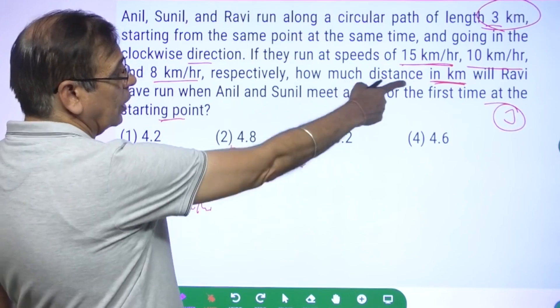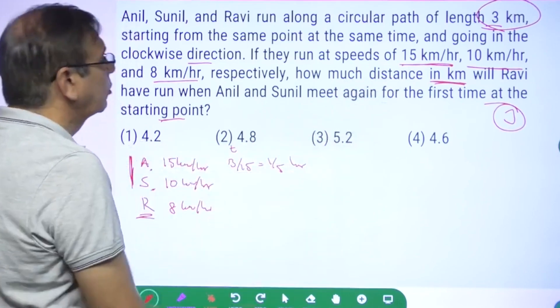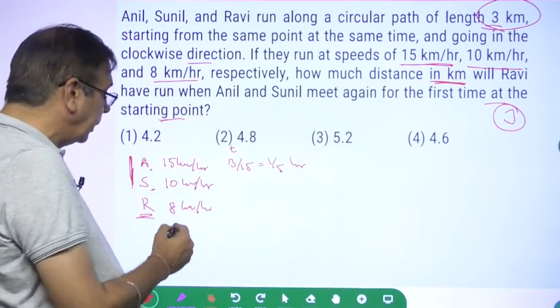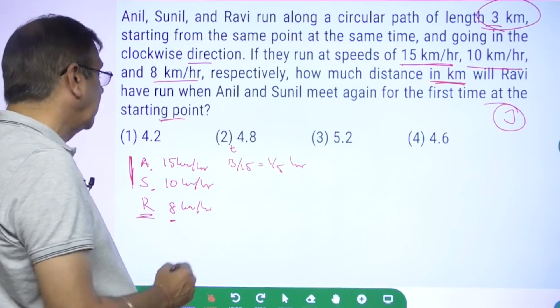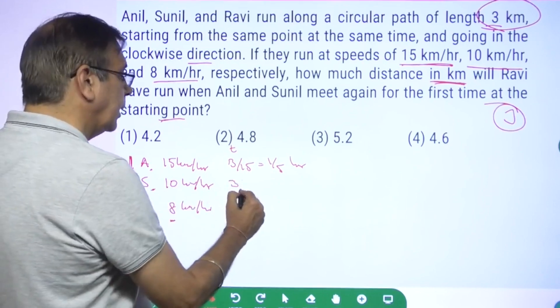The speed is given in kilometers per hour. What about Sunil? 3/10 of an hour.